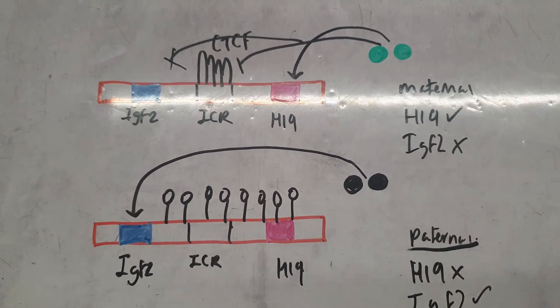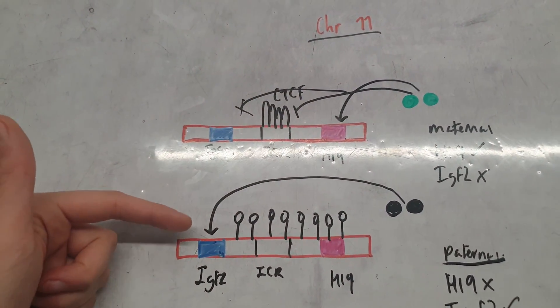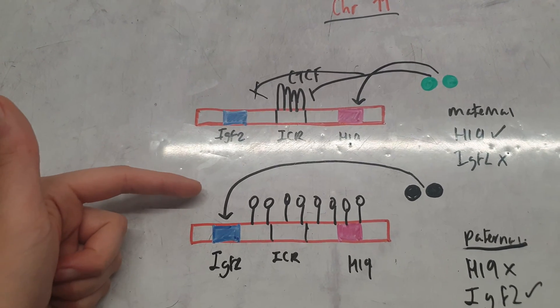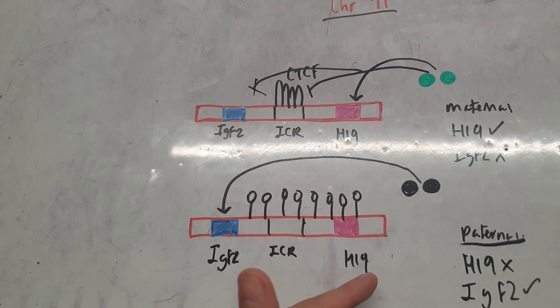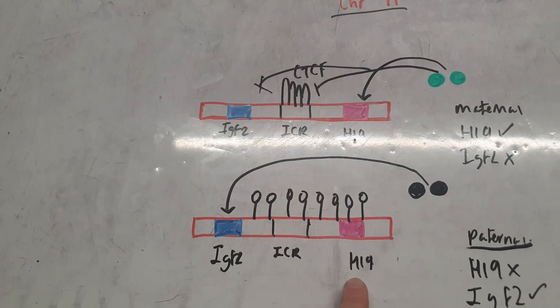Now sometimes this can go wrong. Imprinting errors on chromosome 11—let's take the example of IGF2, mainly because I don't know much about H19. Researchers believe it has perhaps some activity as a tumor suppressor.